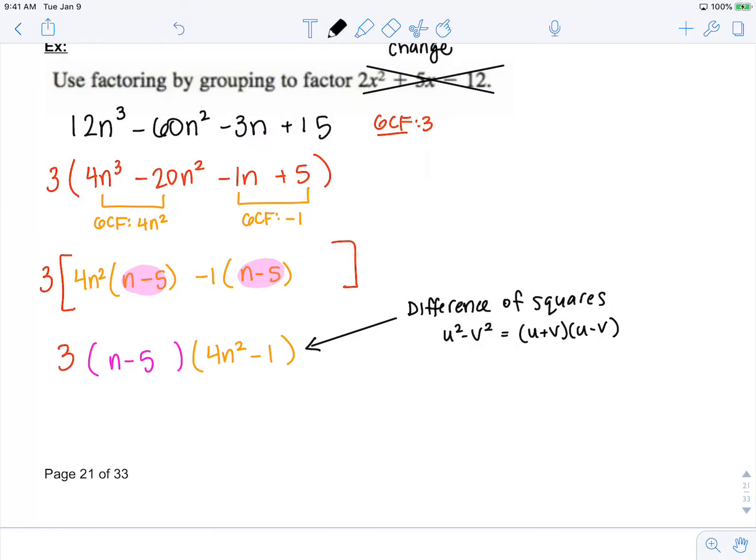So I can factor this completely to be 3, n minus 5. And this one will factor to be 2n plus 1, 2n minus 1. So this problem was great because it required a GCF.